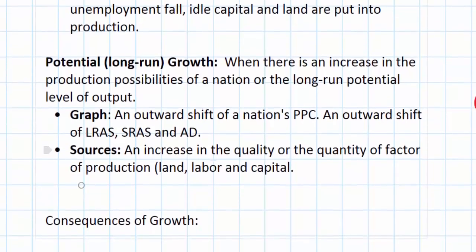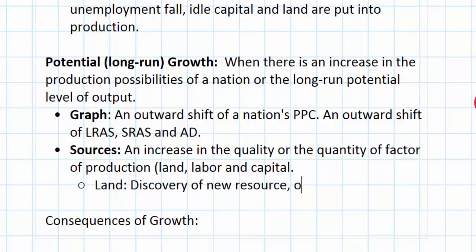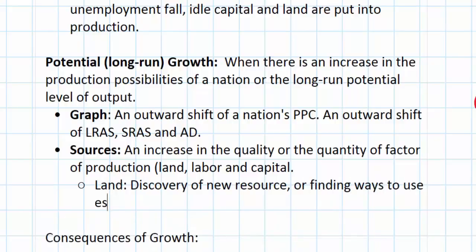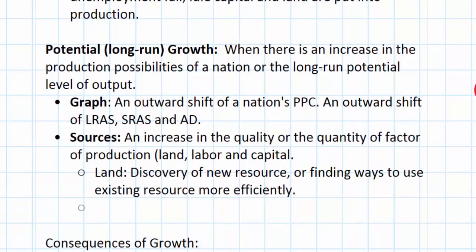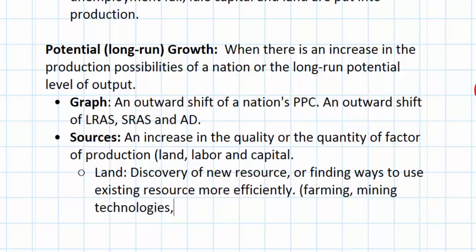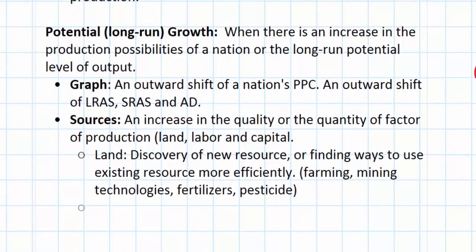How do you increase the quantity of land, labor, and capital? Starting with land: discovering new resources or finding ways to use existing resources more efficiently. Technology can increase the productivity and quality of a nation's land resources — for example, farming technologies, mining technologies, chemical fertilizers, and new methods for extracting resources such as hydraulic fracturing, which is being used widely in the United States to increase the quantity of natural gas and other energy resources. Pesticides also increase the quality of land for farming.